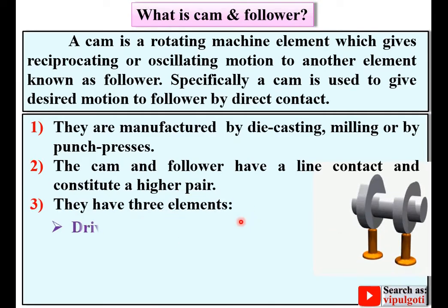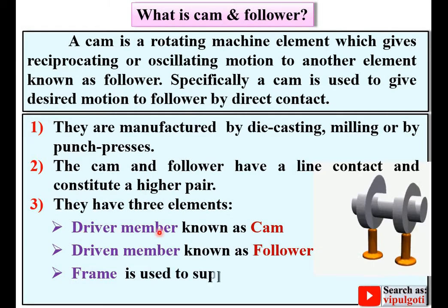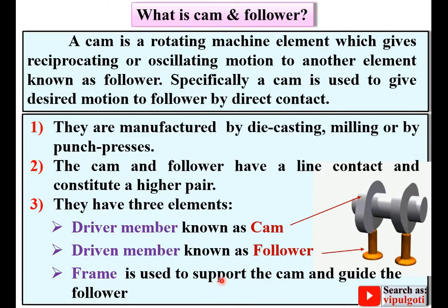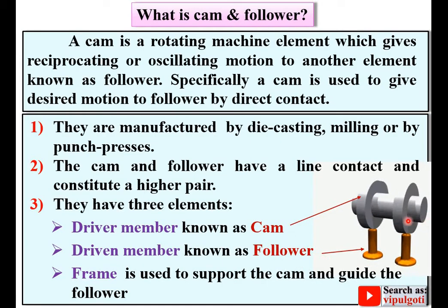CAM and Follower have three elements. The first is the Driver member, known as CAM. The second is the Driven member, known as Follower — it follows the motion of the CAM, which is why it is called Follower. The third is the Frame, which is used to support the CAM and guide the Follower.